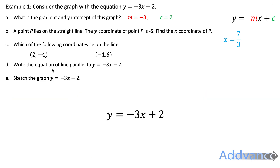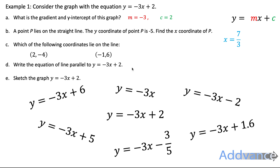Next question: write the equation of a line parallel to y equals minus 3x plus 2. For a line to be parallel, it needs to have the same gradient, which is minus 3. There are many valid answers — for example, y equals minus 3x plus 6, y equals minus 3x, y equals minus 3x plus 1.6. Any line with gradient minus 3 will be parallel to this line.